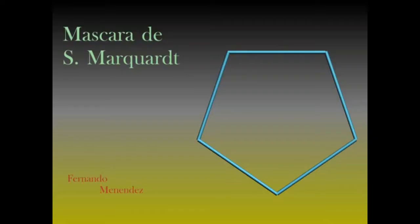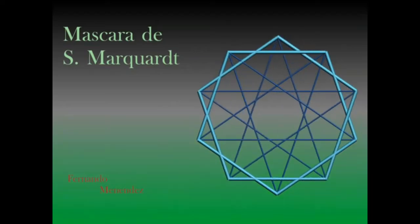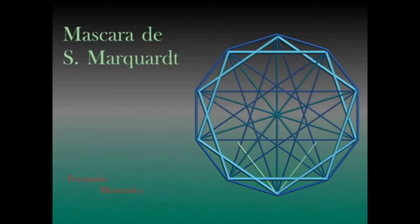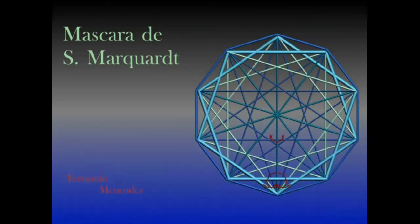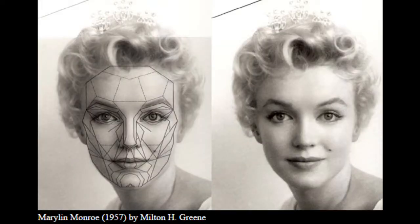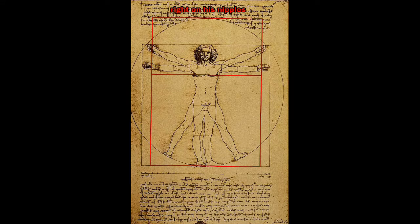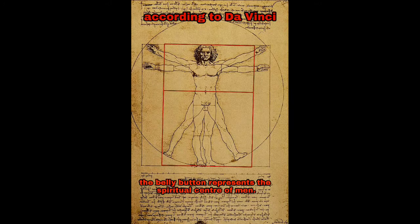What is the Marquardt mask? Stephen R. Marquardt created a mask based on his experience of more than 20 years as a surgeon and mathematician. He used decagons, triangles, pentagons, and line directions. The mask can be applied to all faces, of all colors, of all ethnicities, but some versions present a male version and a female version.